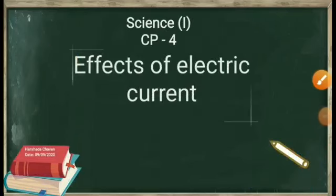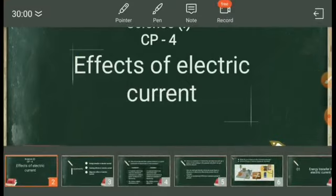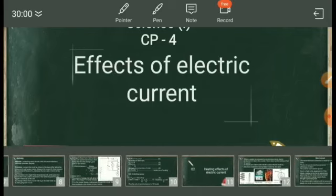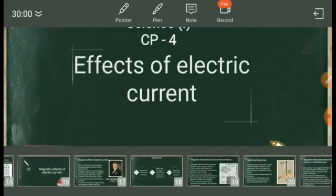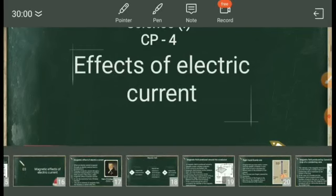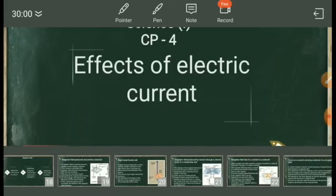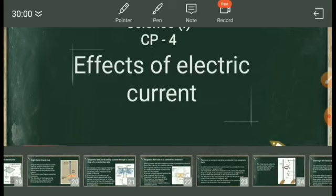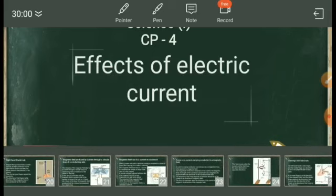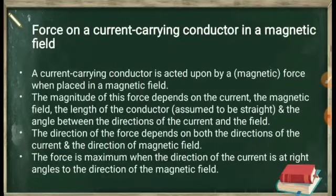Good morning students. Last time we started Chapter 4: Effect of Electric Current. We studied the energy transfer in electric circuits, heating effect, and magnetic effect of electric current with various experiments — the right-hand thumb rule, and three experiments: first in a straight conductor, second in a current through a circular loop, and third in a solenoid. Now we are going to study the force on a current-carrying conductor in a magnetic field.